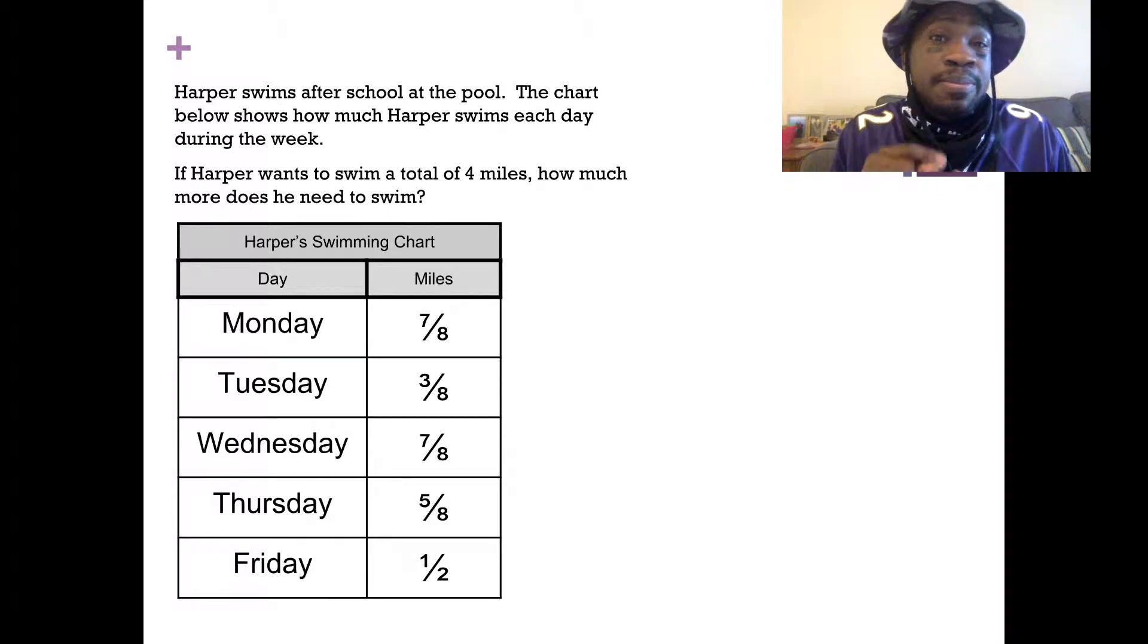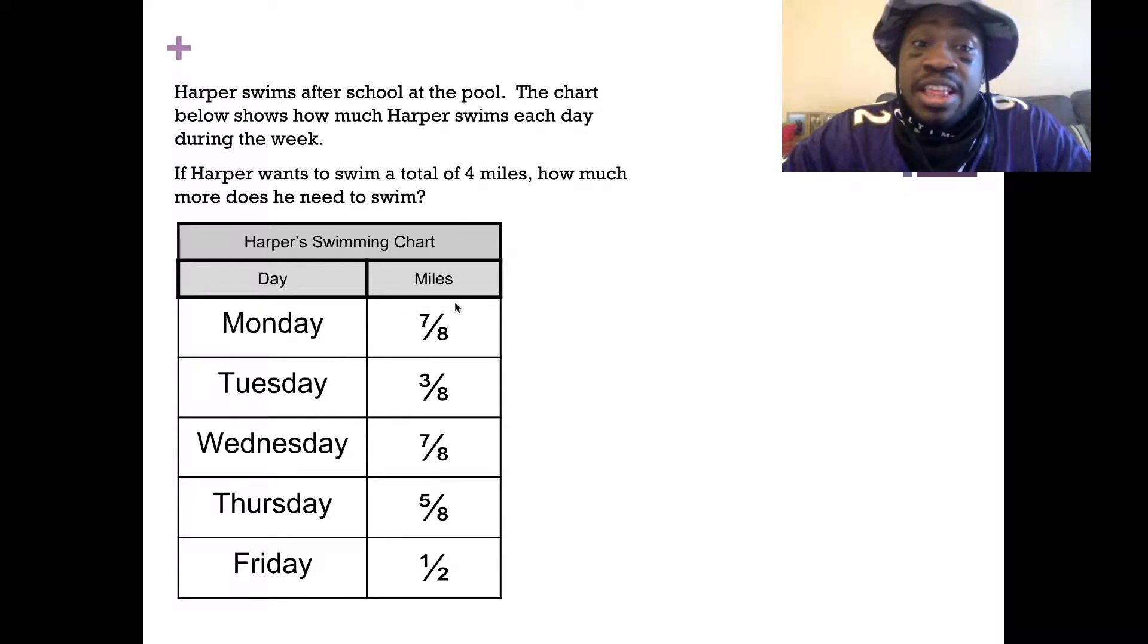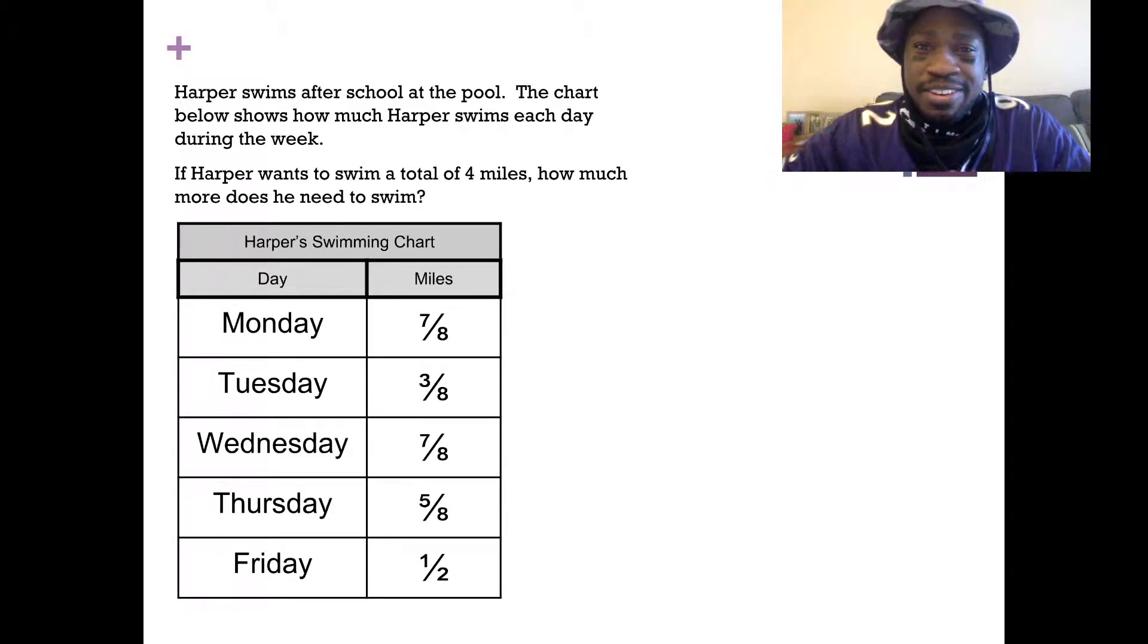We need to add up all the days of the week that he swam. I'm looking at the chart. It says Harper's swimming chart. Oh look, it's for him. I see on Monday he swam seven-eighths of a mile. Tuesday, three-eighths of a mile. Wednesday, seven-eighths of a mile again. Thursday, five-eighths of a mile. Friday, one-half of a mile. Way to be different, Friday. One-half, the different denominator. Get out of here.